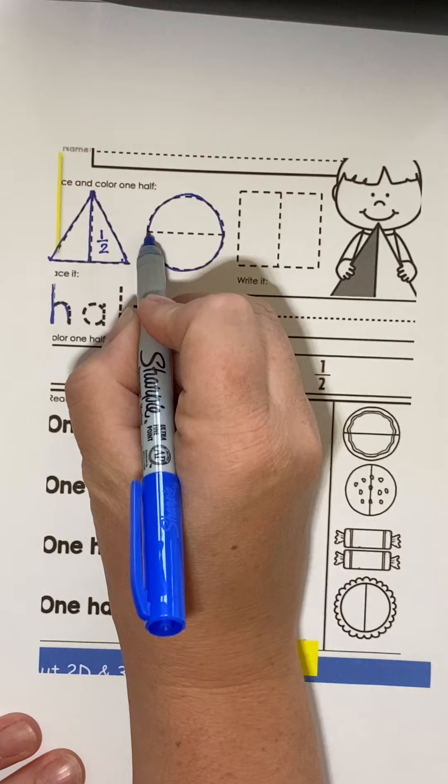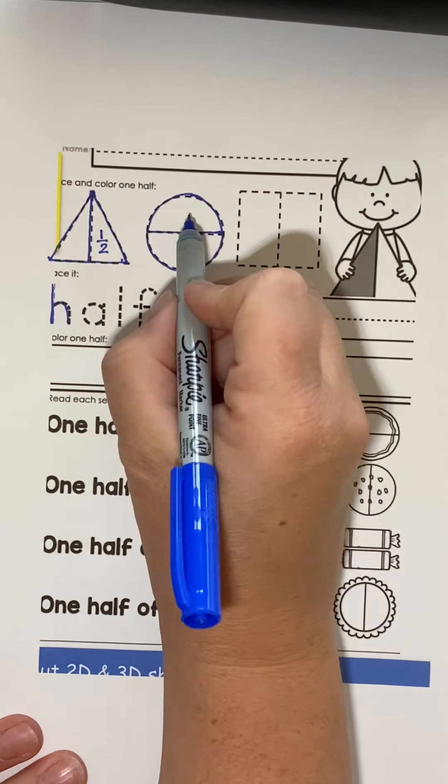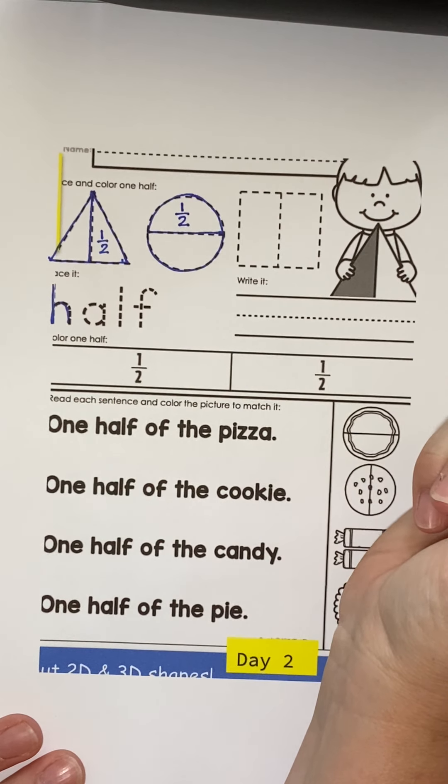If I'm going to divide a circle in half, it would look like this. I would have one over two. One half.